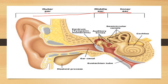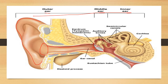The outer ear consists of the ear pinna and an external auditory meatus for receiving sound, which opens into the eardrum — the tympanum membrane — and leads into the middle ear. The middle ear consists of auditory ossicles, the oval window, and the Eustachian tubes. The inner ear consists of semicircular canals, vestibule, and cochlea.